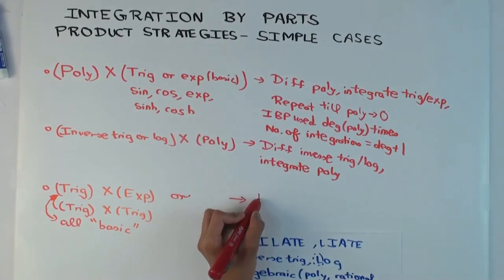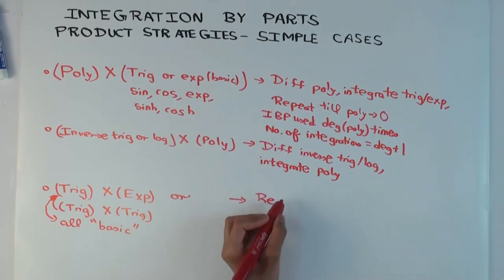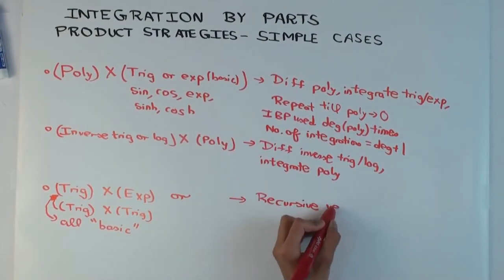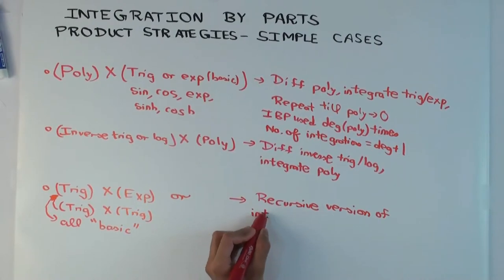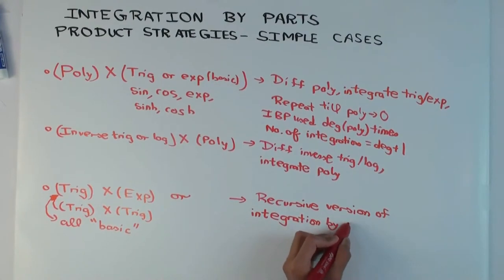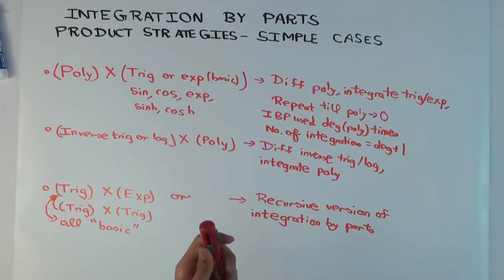So we need some trick, and the trick is the recursive version of integration by parts. Where what you do is, you use integration by parts once or twice, and then you see your original integration reappearing. And then you set things equal to each other and solve, and you get a linear equation.